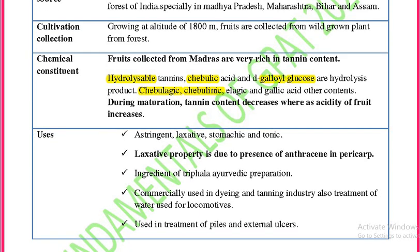The uses of myrobolan include: it is astringent, laxative, stomachic, and tonic. The laxative property of myrobolan is due to the anthracene present in the pericarp. It is also an ingredient of Triphala, the well-known Ayurvedic formulation.